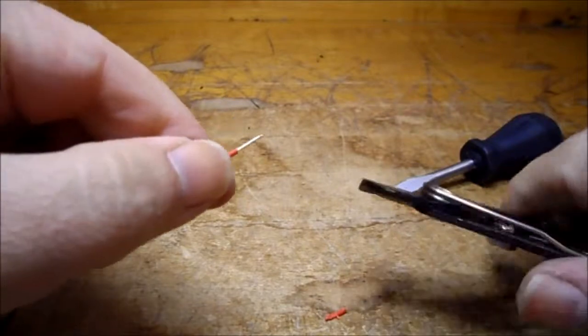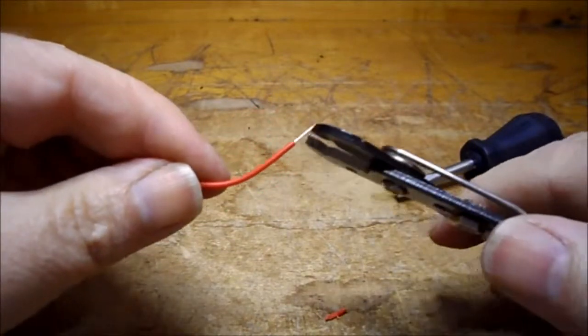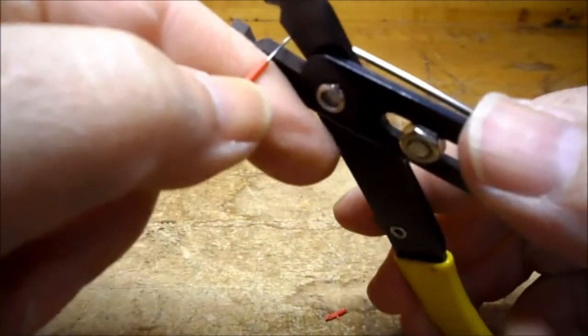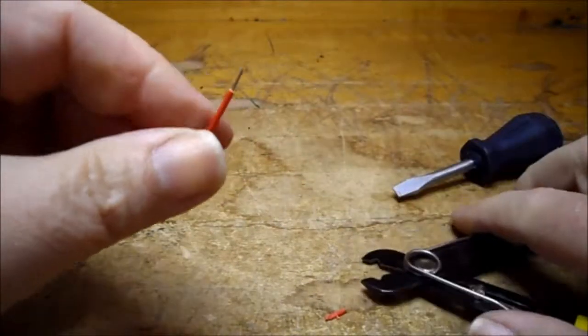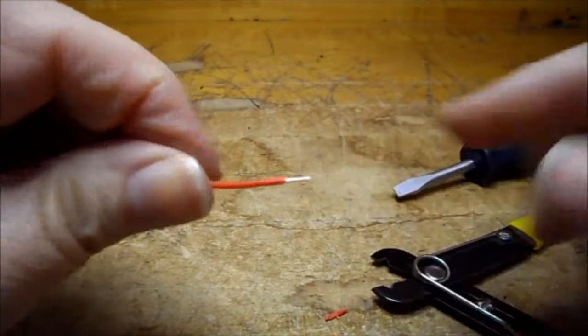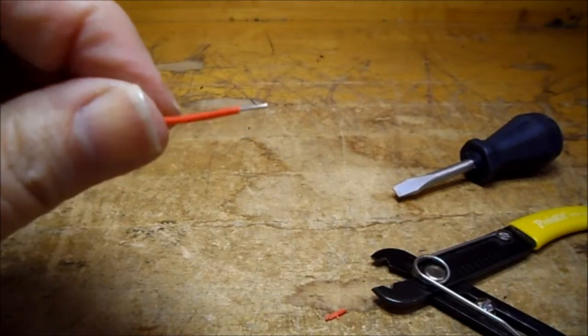So there's our piece of stripped wire. I'm just going to cut the end off because there's a little burr on the end there. This is about the length that you want to strip a piece of wire.